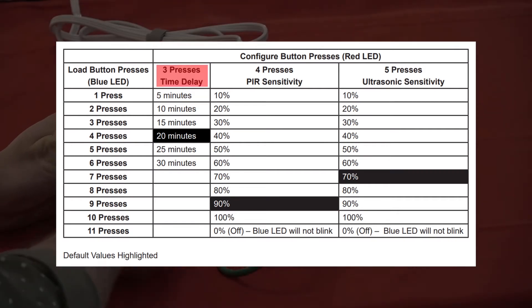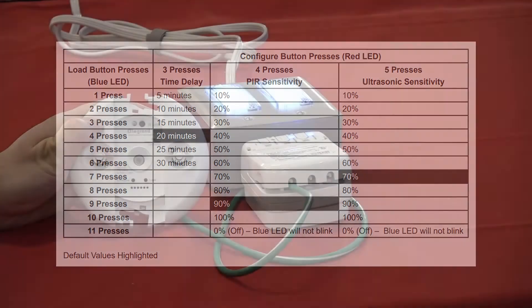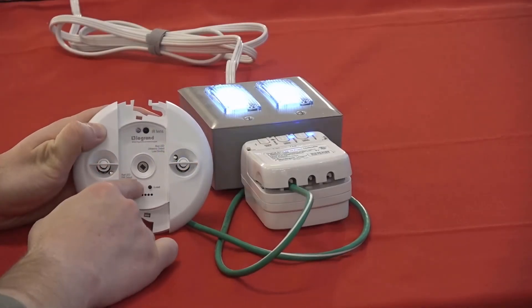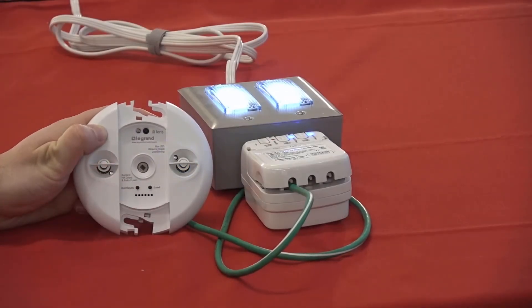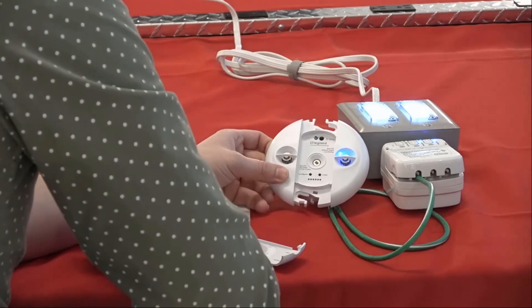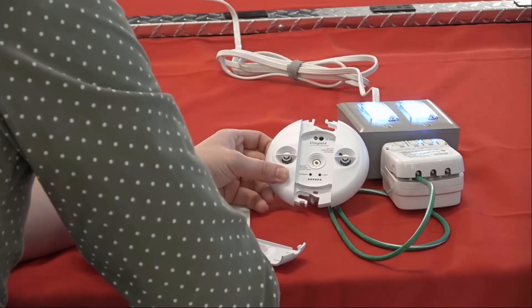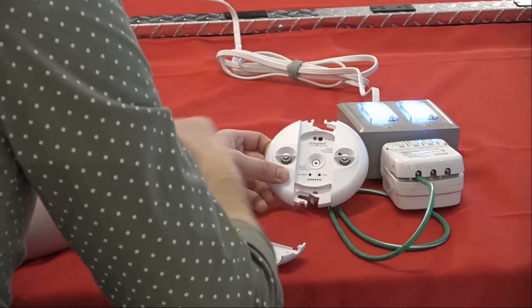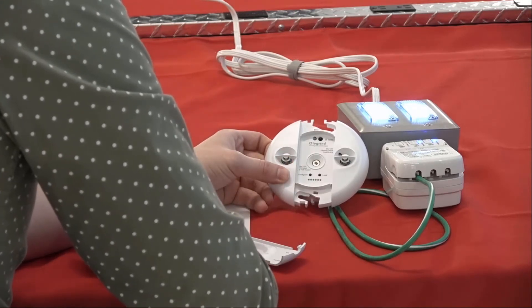Let's change time delay from a default of 20 minutes to 25 minutes. I'll press the configure button three times to enter the parameter setting mode. You'll note that the red LED begins blinking the number of times corresponding to the time delay setting, and the blue LED begins blinking the number of times corresponding to the current value.